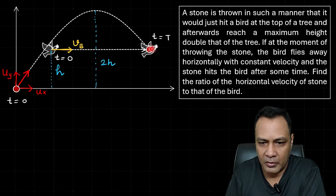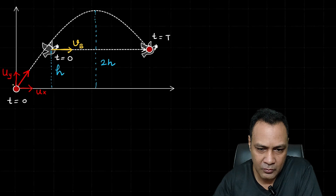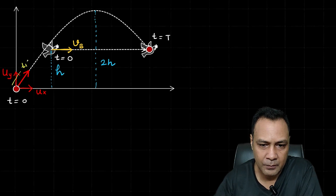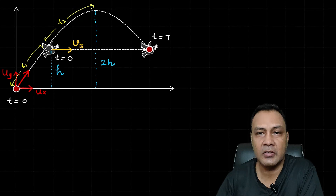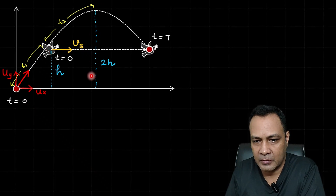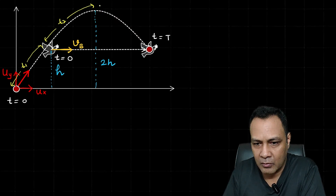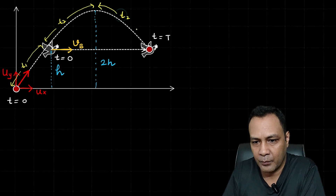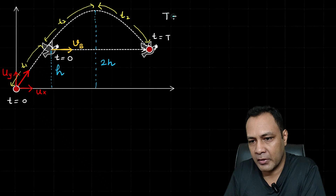Divide the motion of the stone into three parts. From the launch point to the bird's original position takes time t1. From that point to the maximum height takes time t2. Since the maximum height and the bird's original position are at the same horizontal level, by symmetry the descent from maximum height back to that level also takes time t2. So the total time of flight is t1 plus 2t2.